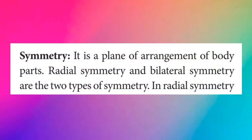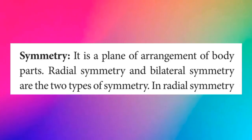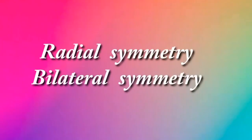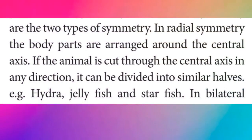Body symmetry is the plane of arrangement of body parts. There are two types: radial symmetry and bilateral symmetry. In radial symmetry, the body parts are arranged around the central axis. If the animal is cut through the central axis in any direction, it can be divided into similar halves.